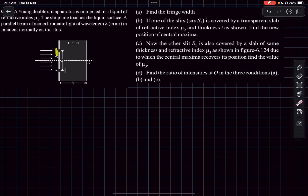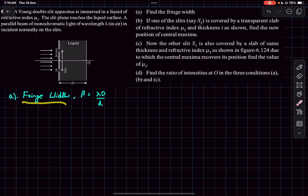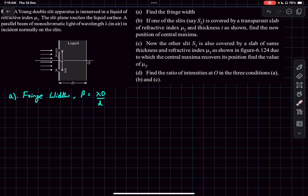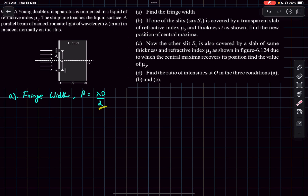We have to ignore the slabs here because they are introduced in later options. Fringe width is the distance between two adjacent maximas or minimas. The formula for fringe width is lambda — the wavelength of light — times the separation between the screen and the slit plane, divided by the distance between the slits.